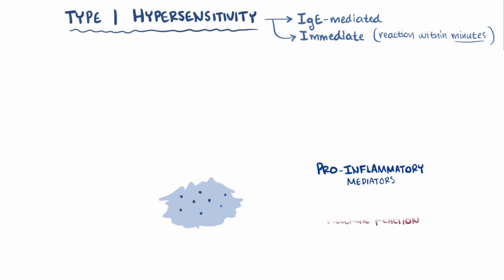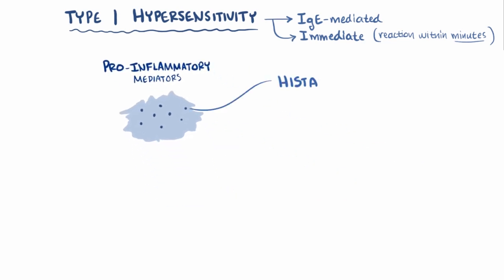One of the major mediators released in an allergic reaction is histamine. Histamine binds to H1 receptors and causes the smooth muscles around the bronchi to contract, which means the airways get smaller, making it more difficult to breathe.